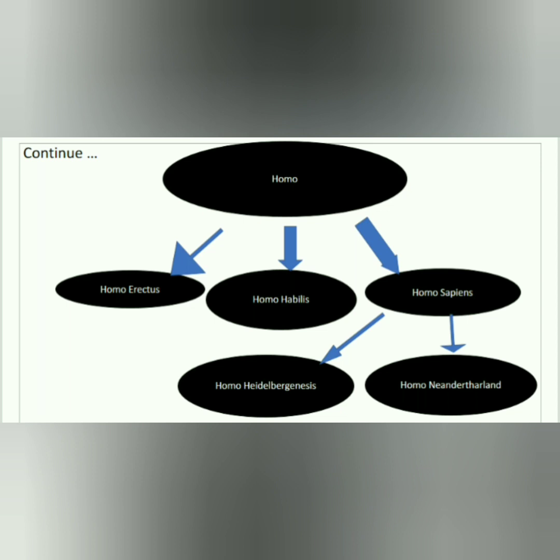There are evidences suggesting that hominids have an African origin. Firstly, the group of African apes is most closely related to hominids. Secondly, the earliest hominid fossils, belonging to the genus Australopithecus, have been found in East Africa and date back to about 5.6 million years ago.